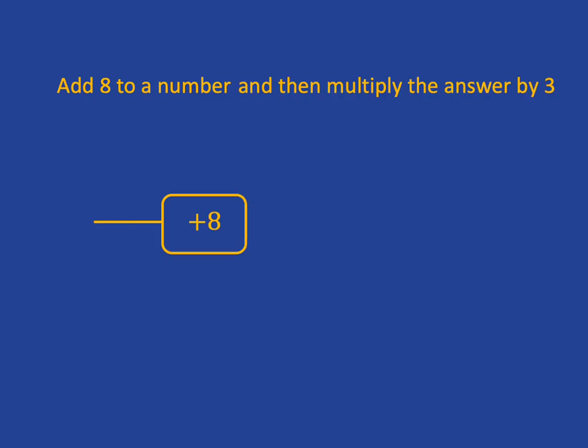Let's try just reversing those two statements. So let's start this time by adding 8 to the number and then multiplying the answer by 3. So that would be the flow diagram that represents that statement.